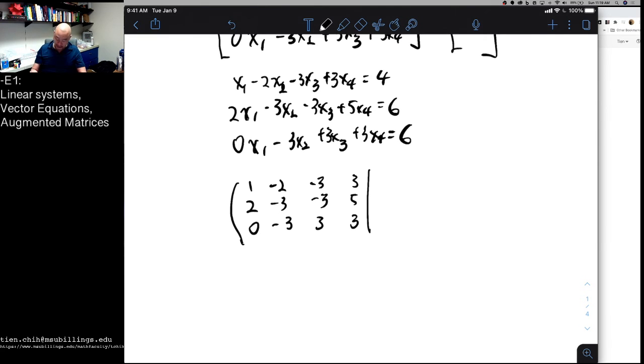And the constants on the other, this is what makes this matrix augmented, and then the constants in the last column.